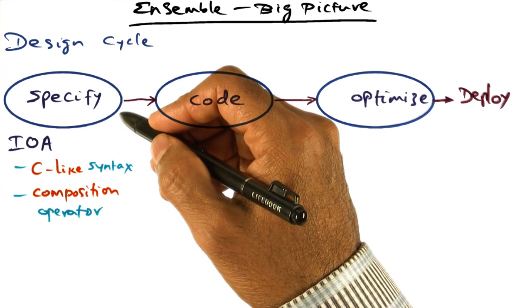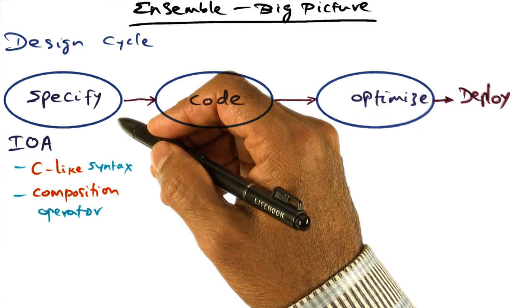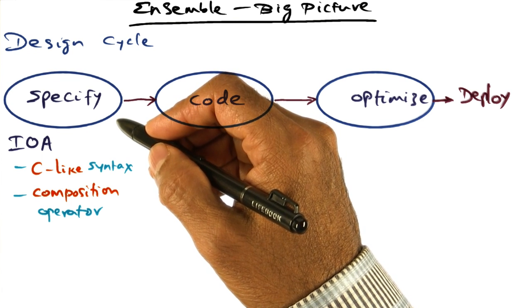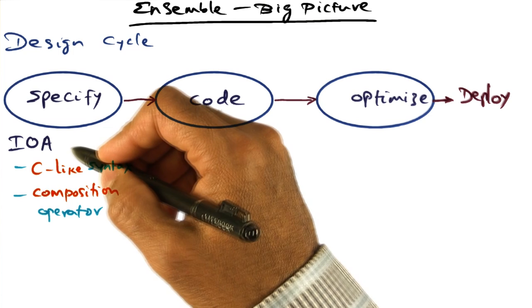For this part of the design cycle, namely specification of what we want to build, a theoretical framework called IO Automata is used.